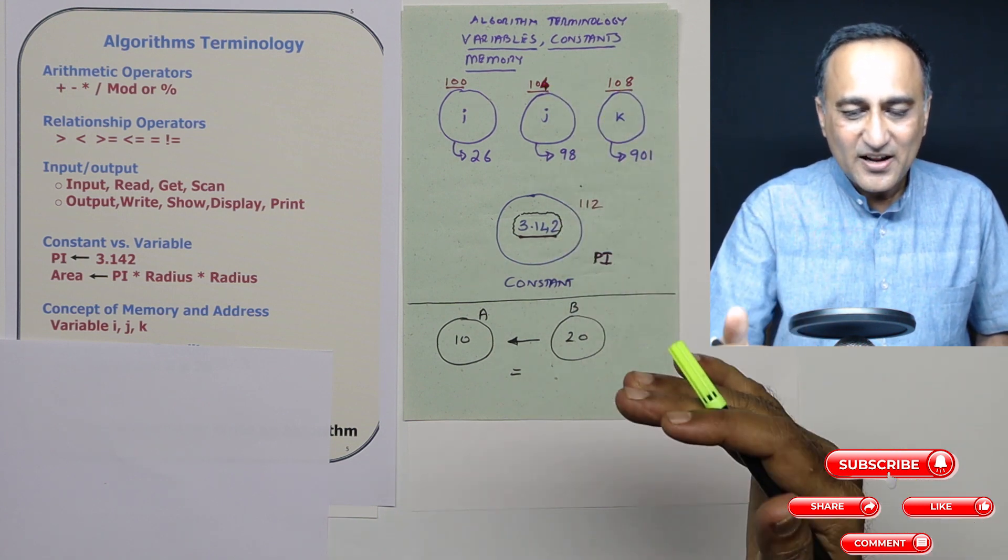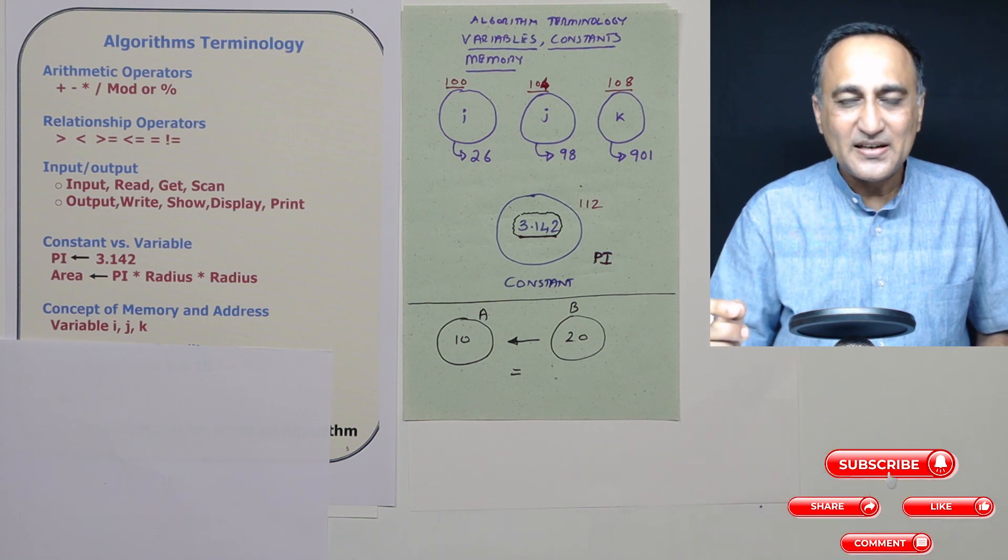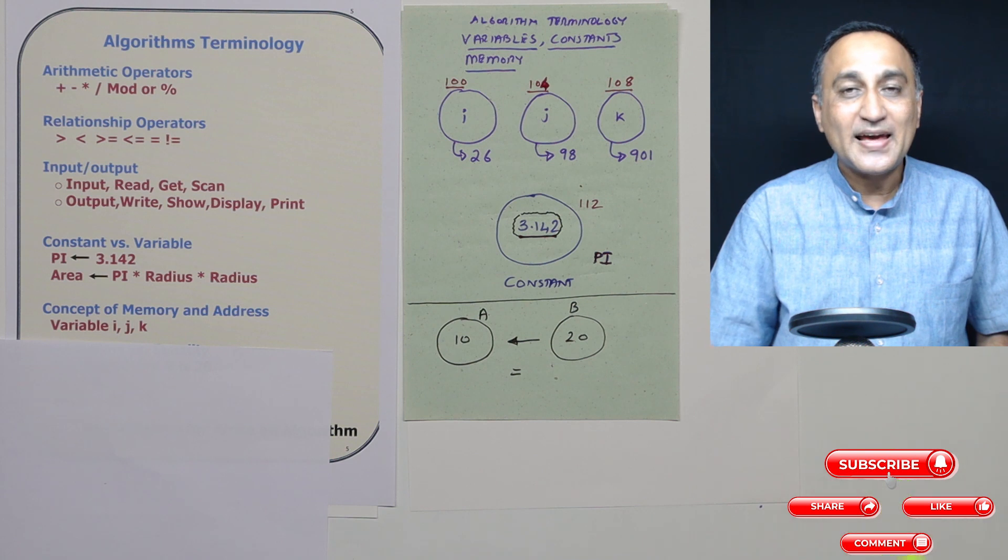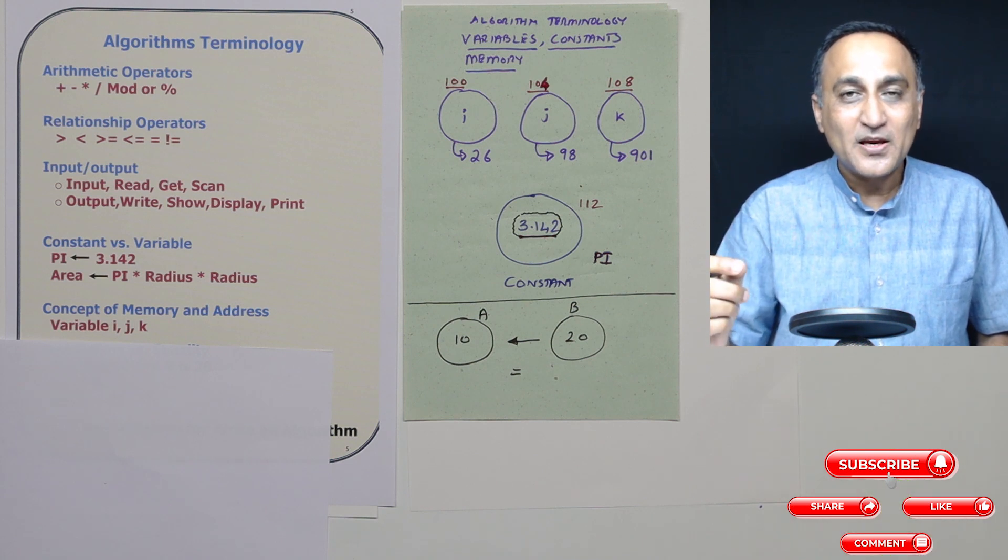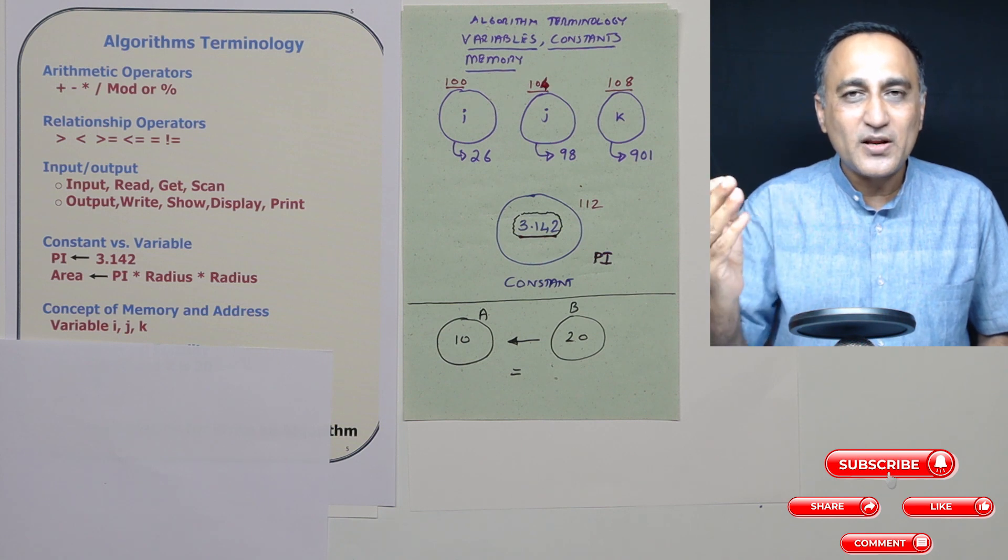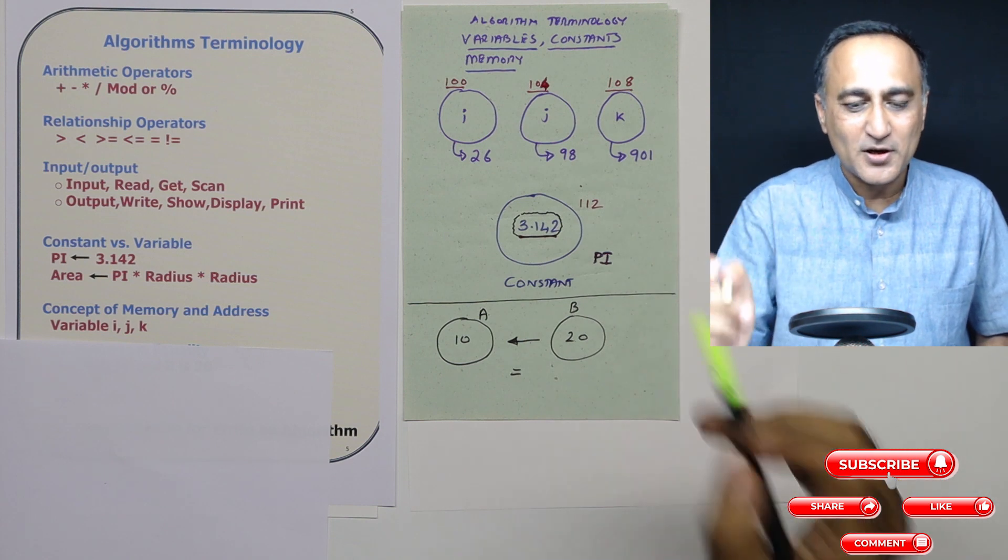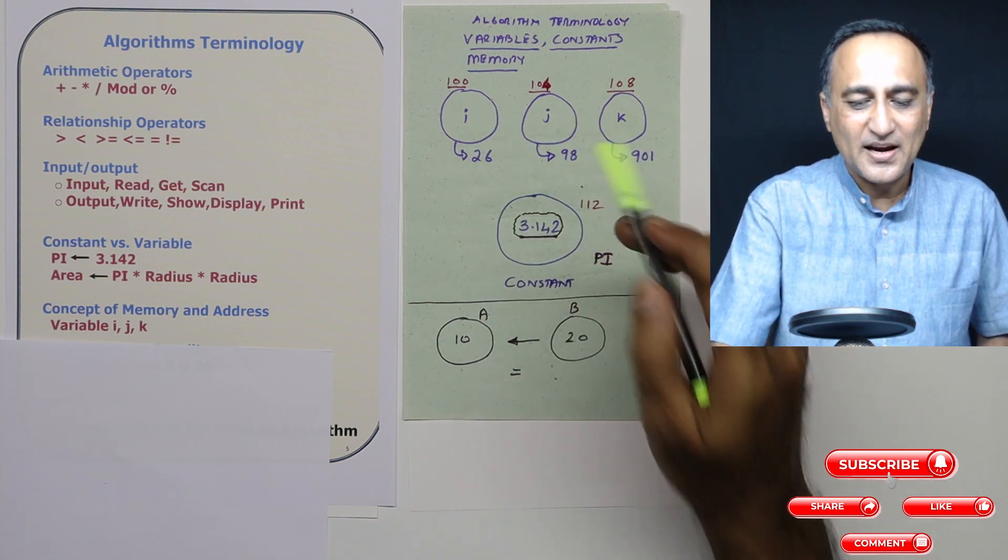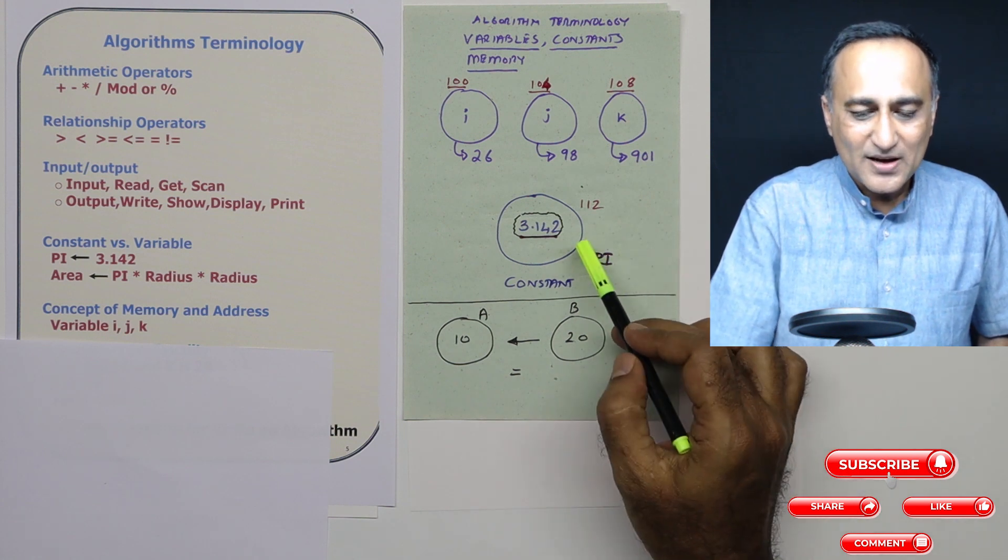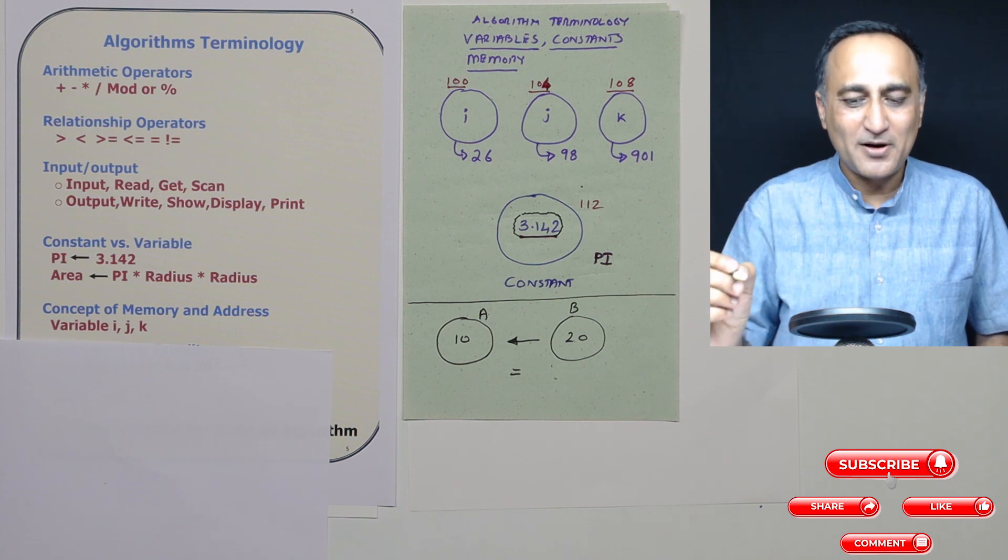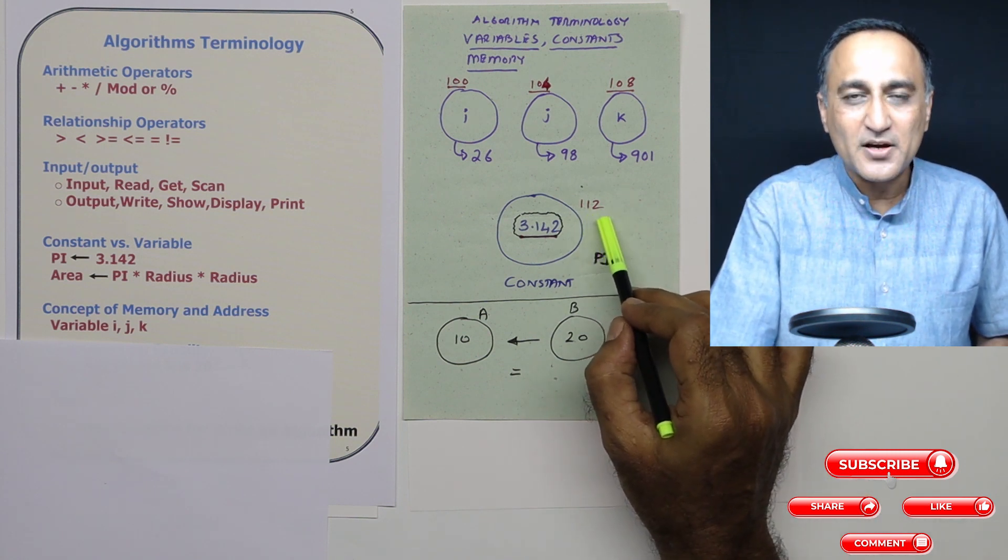This 100, 104, 108 are representing that particular memory location. Actually, if you do machine language and assembly language, you will be using addresses to directly refer to the memory. But in high-level languages, instead of referring to the address, if you have 100 variables, it becomes crazy to refer to the variable addresses. So we refer to memory locations by their names like I, J, and K. Here I have shown, for example, pi - being a constant - also occupies a memory location. In this case, I'm assuming it is occupying memory location 112.